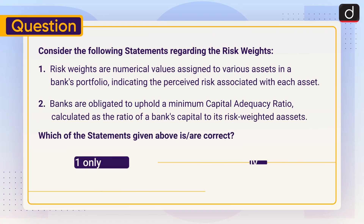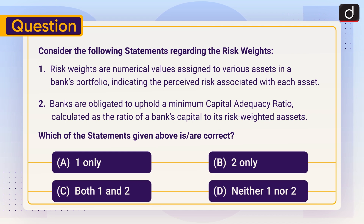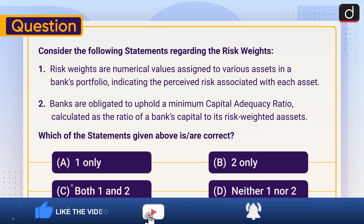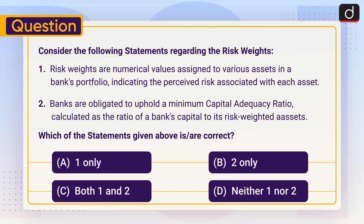Now it's time for the practice question. Consider the following statements regarding risk weights: One, risk weights are numerical values assigned to various assets in the bank's portfolio, indicating the perceived risk associated with each asset. Two, banks are obligated to uphold a minimum capital adequacy ratio, calculated as the ratio of a bank's capital to its risk-weighted assets. Which of the statements given above is correct: one only, two only, both one and two, or neither one nor two? Send the answer in the comment section. Stay tuned for the next episode. Thanks for watching.